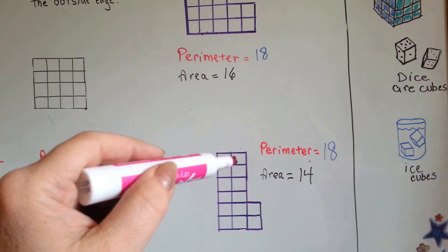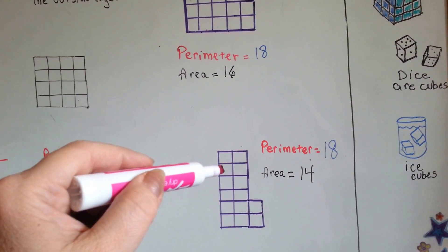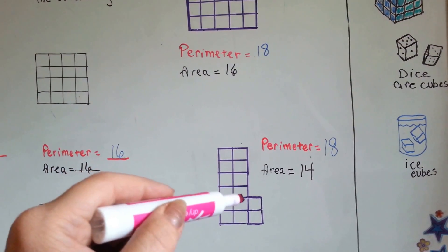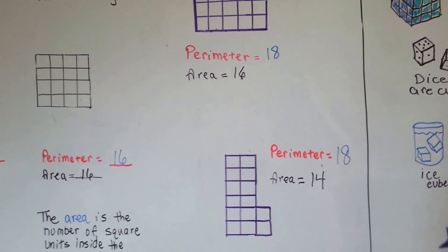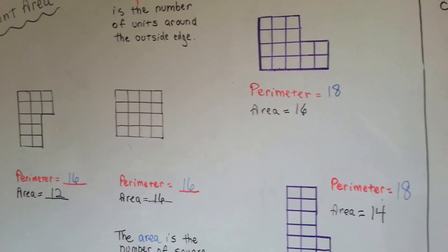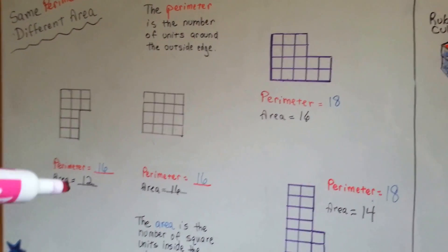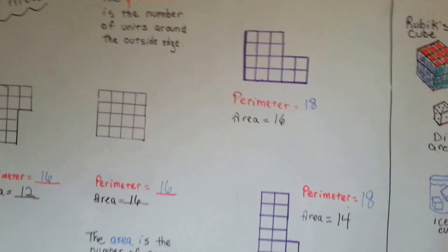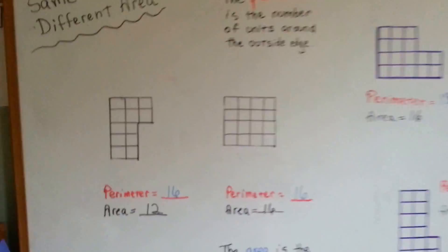And the area is, let's count by 2s, is 2, 4, 6, 8, 10, 12, 14. So see, you can have the same perimeter in shapes, and the area can be different.